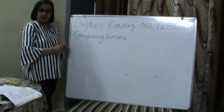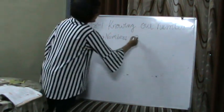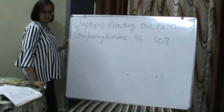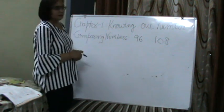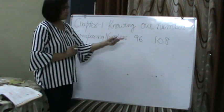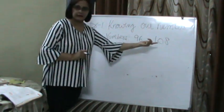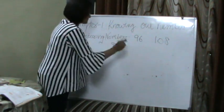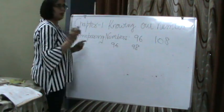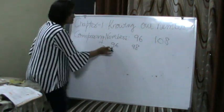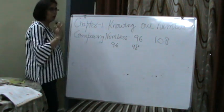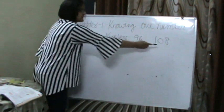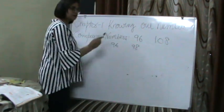In comparing numbers, suppose I have given you two numbers — this is 96 and the second number is 108. If we have to compare these numbers, first we will say the numbers in words. This is 96, this is 108. Now out of these two, which number is bigger? 108.